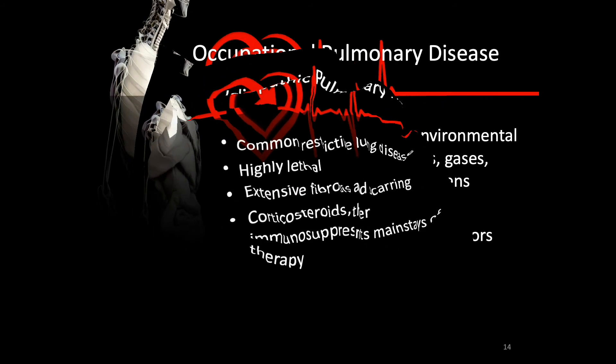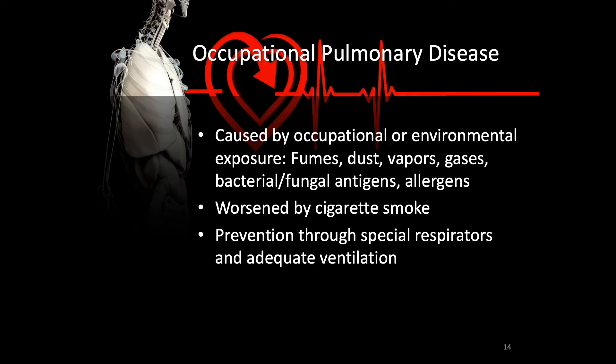In the later stages of the disease, the patient will have chronic dyspnea along with the anxiety, panic, and fear that go along with it. Idiopathic pulmonary fibrosis is often linked to occupational pulmonary diseases — pulmonary diseases caused by occupational or environmental exposure from fumes, dust, vapors, gases, bacterial or fungal antigens, and allergens. These conditions are made worse by cigarette smoke, and prevention is accomplished through special respirators and maintaining adequate ventilation.